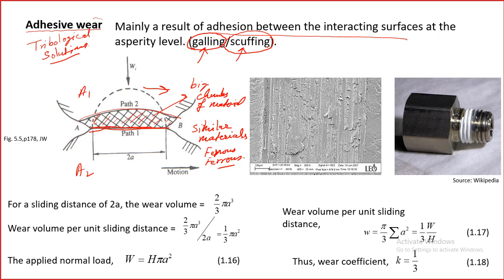Scuffing is used when lubricant fails in the beginning stages. Failure of the lubricant can lead to scuffing, and when it is much more severe, it is called galling. The reasons for adhesive wear include bad material selection, lubricant failure in the bearing, or temperature rise.